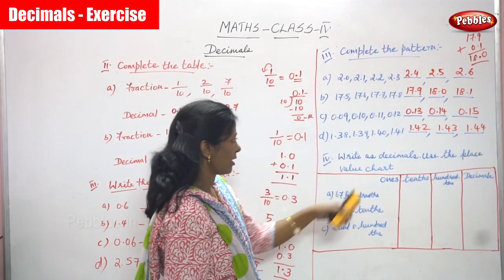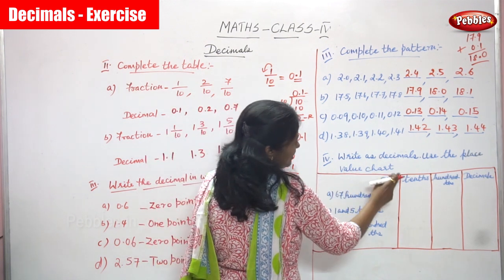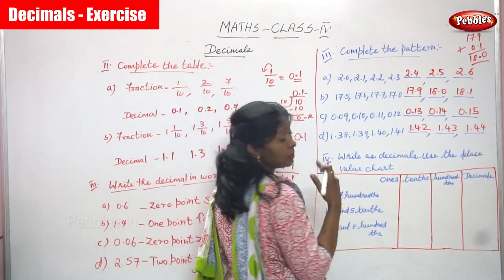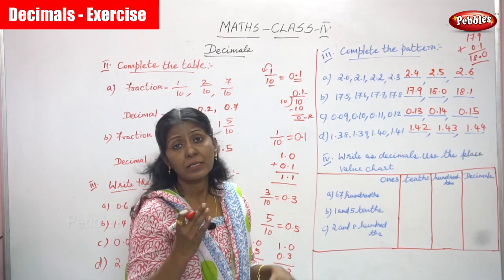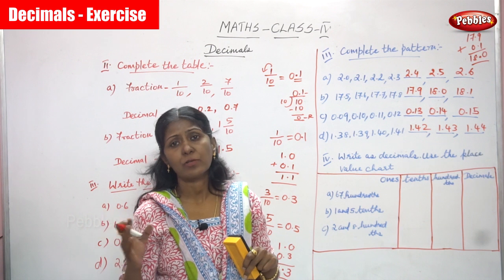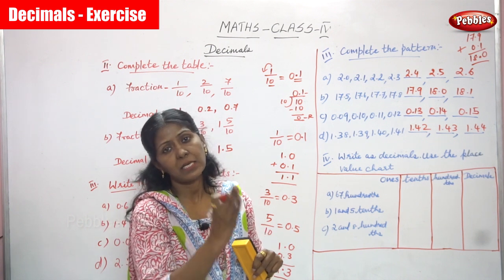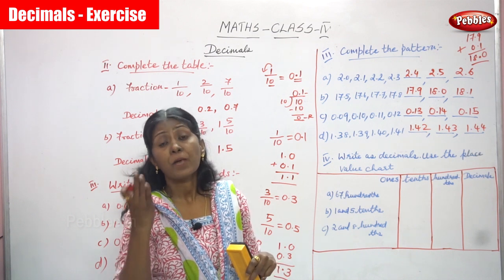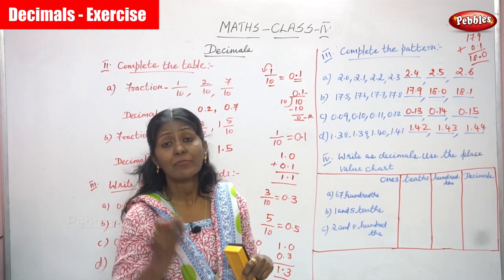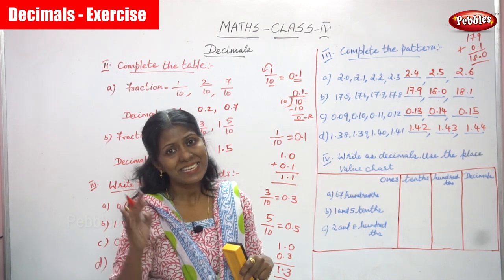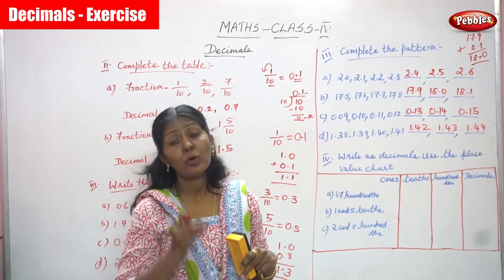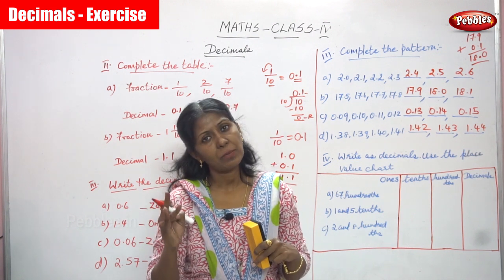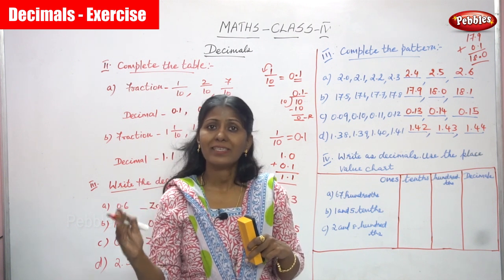Now, Number 4: write as a decimal using the place value charts. After the decimal point you must say each digit once. The basic place value is ones, tens, hundreds, thousands, ten thousands, lakhs and so on. But for decimal place value — after the point — the first decimal place is called tenths, the second decimal place is called hundredths, and the third decimal place is called thousandths.